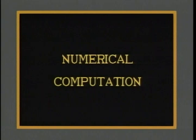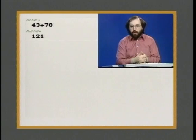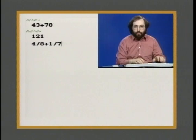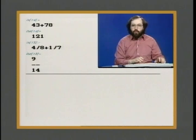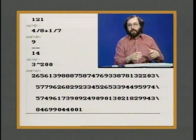Let's go back and look in a bit more detail at each of these areas, starting with numerical computation. The first thing to realize about Mathematica's numerical computation is that Mathematica can give you exact answers for numerical calculations, even when those involve a very large number of digits or involve rational approximations. Let's say we ask Mathematica what's 4 over 8 plus 1 over 7. What we'll get is a rational number, 9 over 14, as the answer — the exact result for this computation. Similarly, if we ask Mathematica what's 3 to the power 200, it'll give us an exact answer.